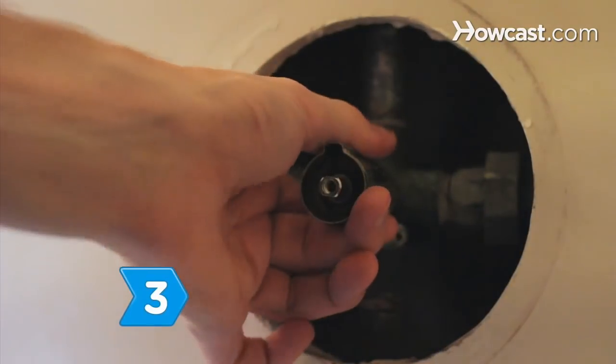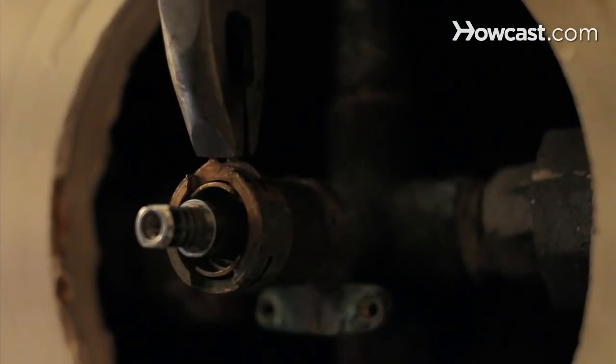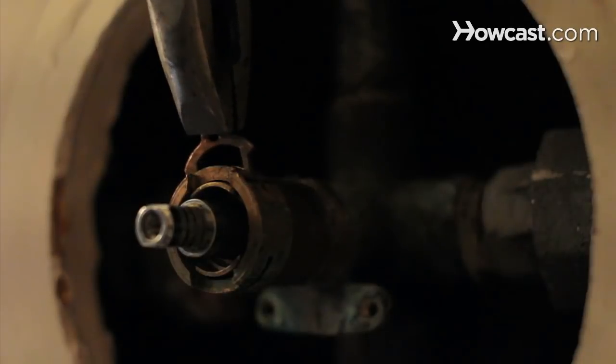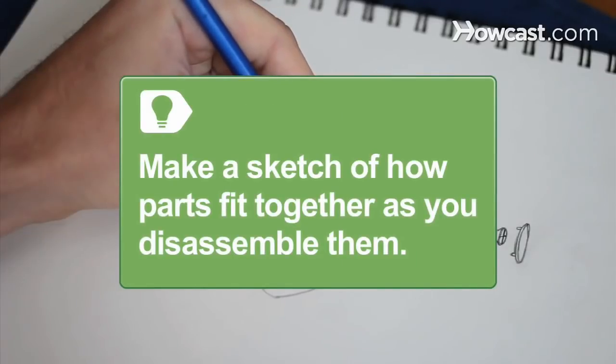Step 3. Remove the stop tube and cartridge with pliers if you have a washerless faucet. Washerless faucets use a single knob to control hot and cold water. Make a sketch of how parts fit together as you disassemble them. This will make it easier to reassemble the parts.